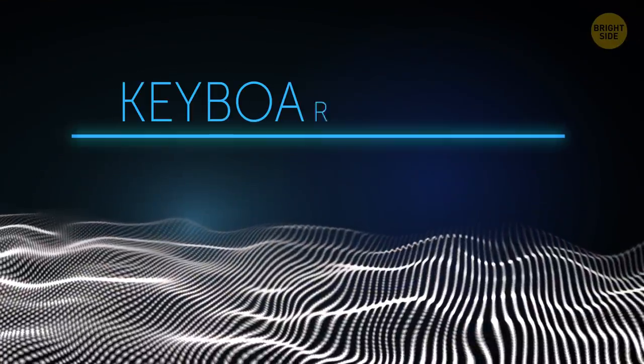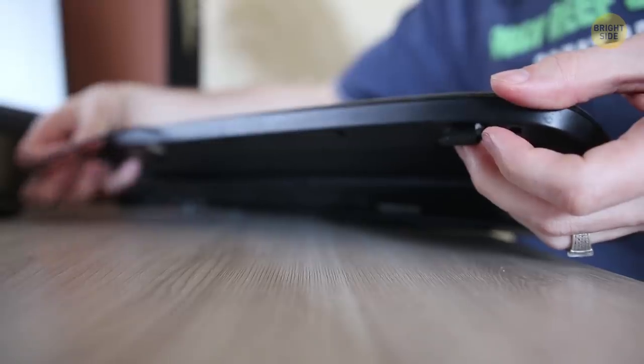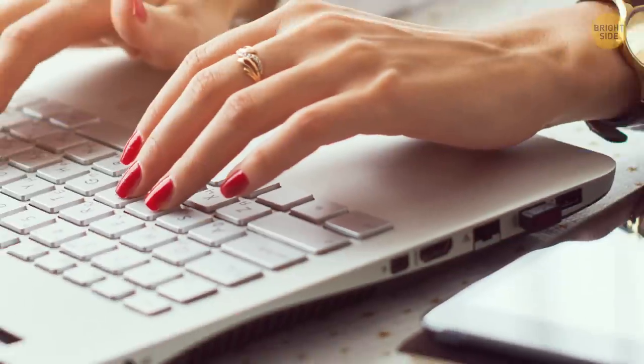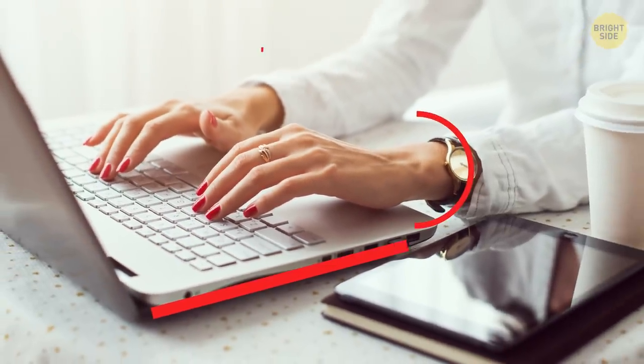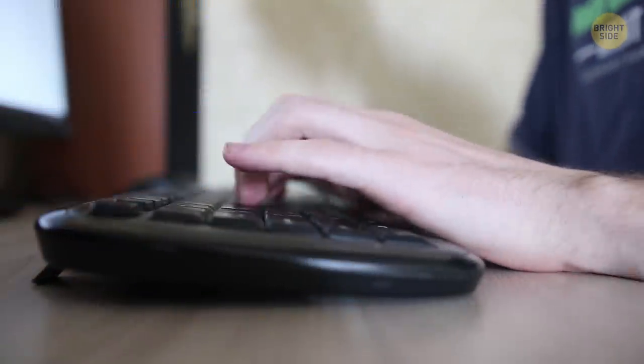Keyboard legs. Well, it may seem obvious that those little things are here to make your keyboard more ergonomic. But in reality, that's far from the truth. Having the keyboard in a flat position is actually better for your wrists. These legs are only here to help you see the letters you're typing more clearly.